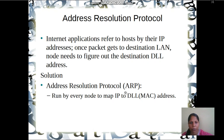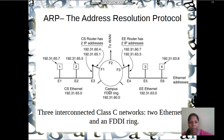To understand why ARP is needed, consider three interconnected Class C networks: F1, F2, and F3 — a Fiber Distributed Data Interface ring with IP address 192.31.60.0. This is inside a college with a Computer Science department and an Electrical department. The CS department has machines E1, E2, and E3; the Electrical department has E5 and E6. Machine E3 has two IP addresses: 192.31.60.4 and 192.31.65.1.